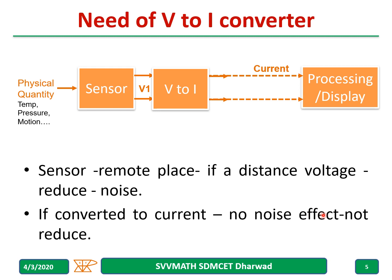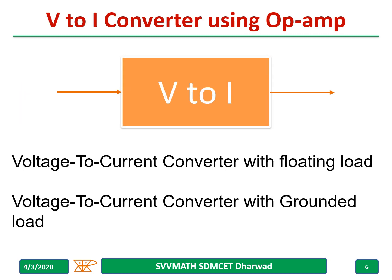When we convert to current, the noise effect will be very less and the current will not be reduced — the current will always remain the same in a conductor. There are two methods for voltage to current conversion. In part one we are going to talk about the floating load, and in part two we will discuss the grounded load.